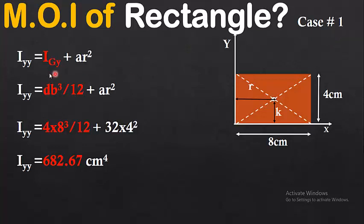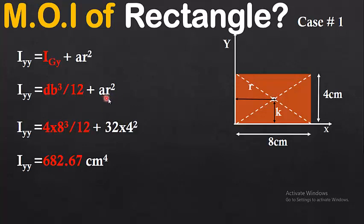Now we find the moment of inertia about the y-axis for case one: Iyy = Igy + Ar². For a rectangle, Igy = db³/12 (note: for Igx it was bd³, for Igy it is db³). Substituting the values of d, b, A, and r gives the moment of inertia about the y-axis for case one.